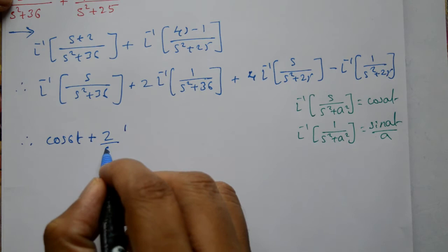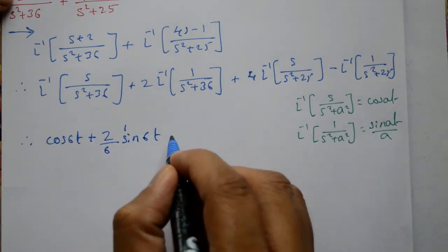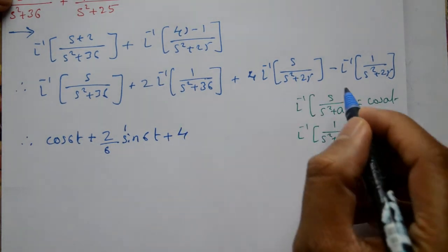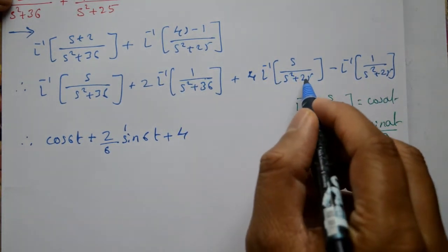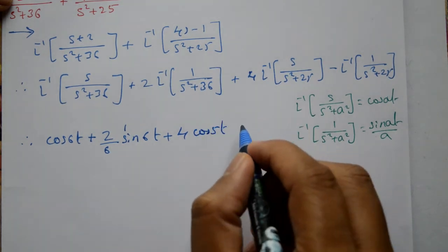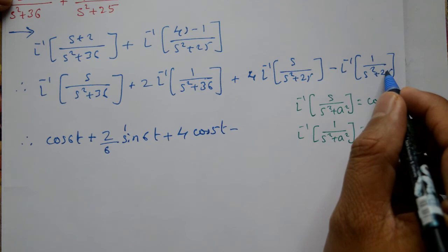Plus 4 times, again using cos at where a is 5, this is cos 5t. Minus, and this is 5 squared equals 25...